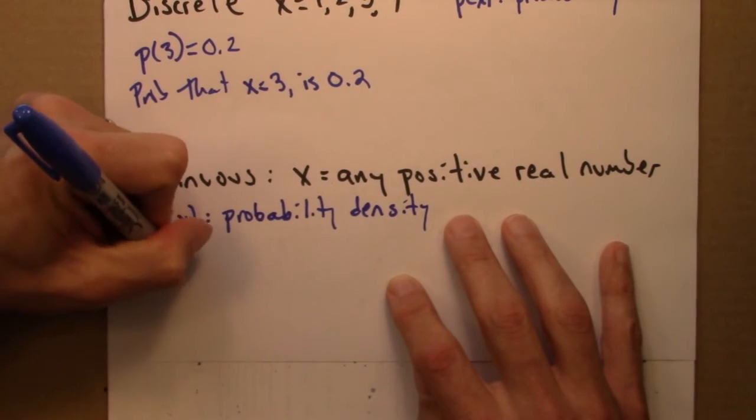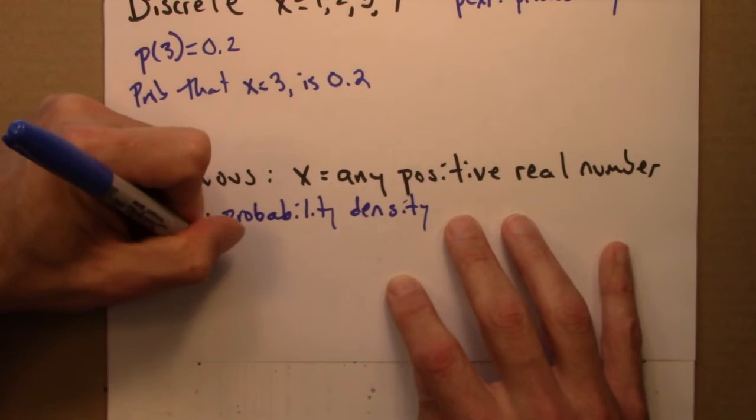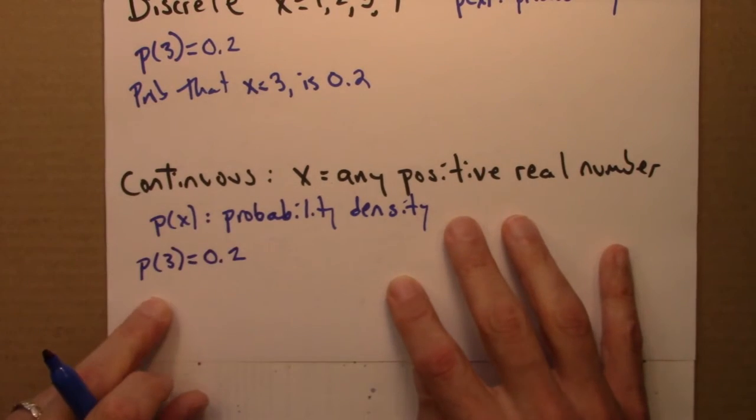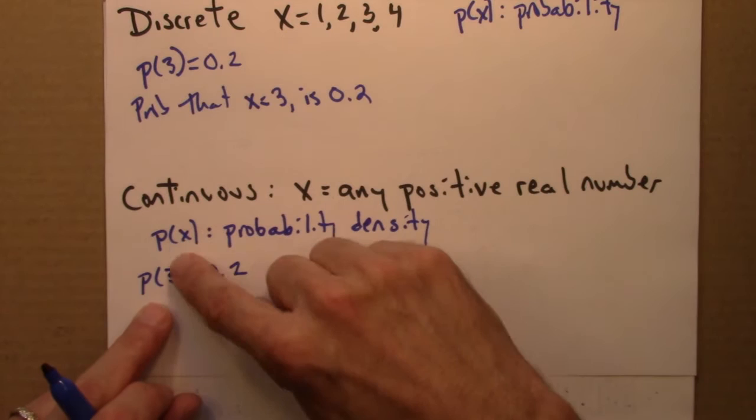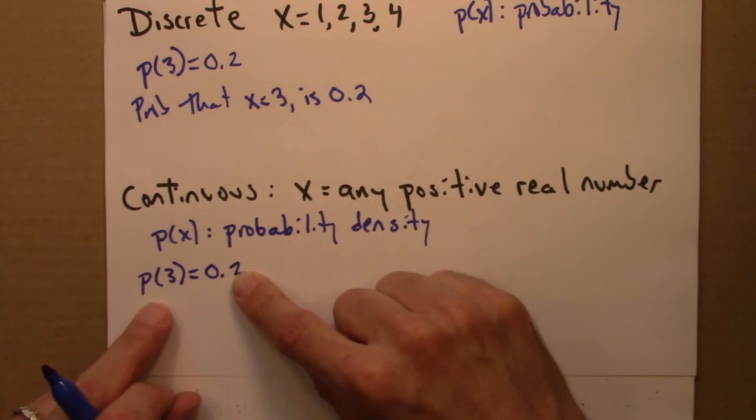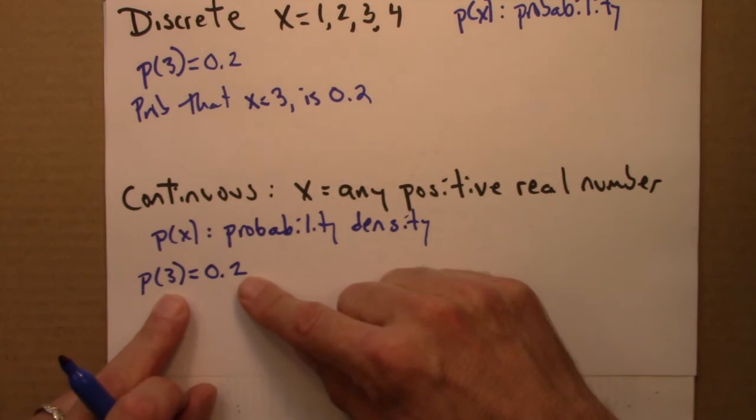And saying something like p of 3 equals 0.2 does not mean that the probability that x is 3 is 0.2. Here's maybe a way to think about that.